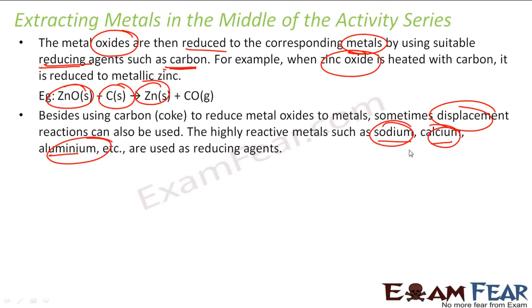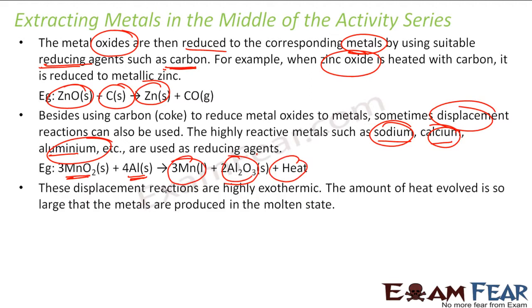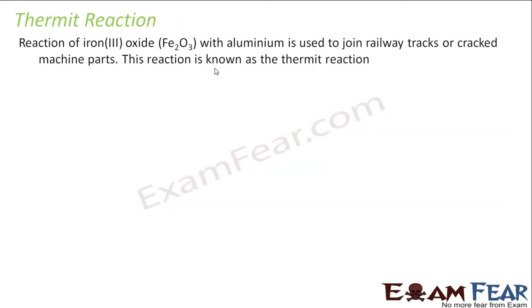Sometimes when you cannot use carbon, we use sodium, calcium, or aluminum. For example, for manganese oxide, you cannot use carbon, so we use aluminum to get manganese out and heat is also generated. Please note that these displacement reactions are highly exothermic. The amount of heat generated is so high that the metal produced is in a molten state — very, very exothermic with very high heat.